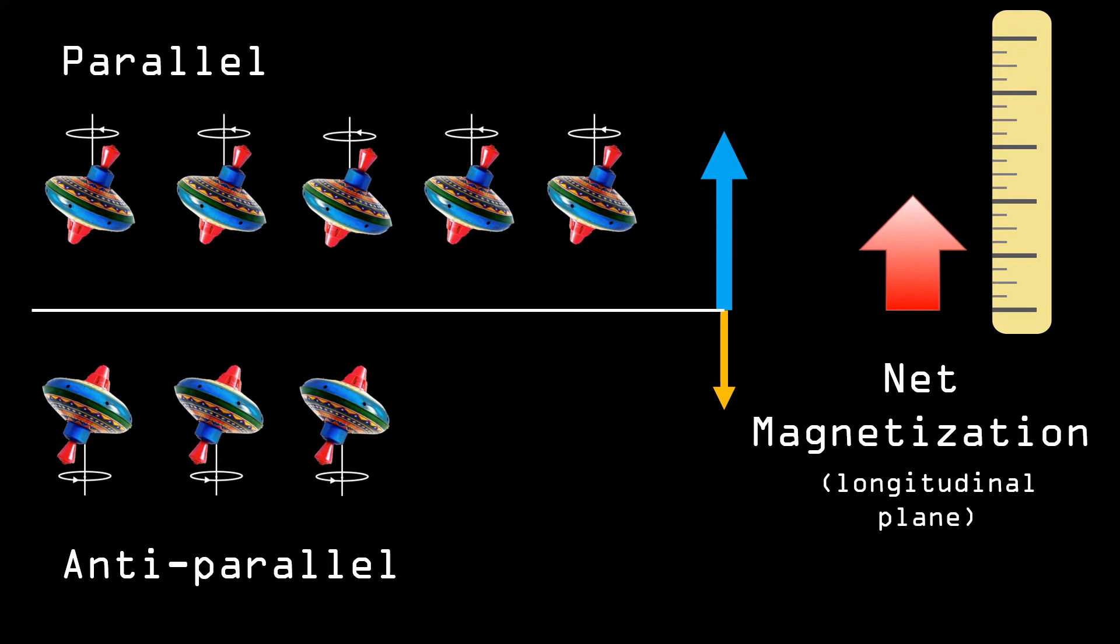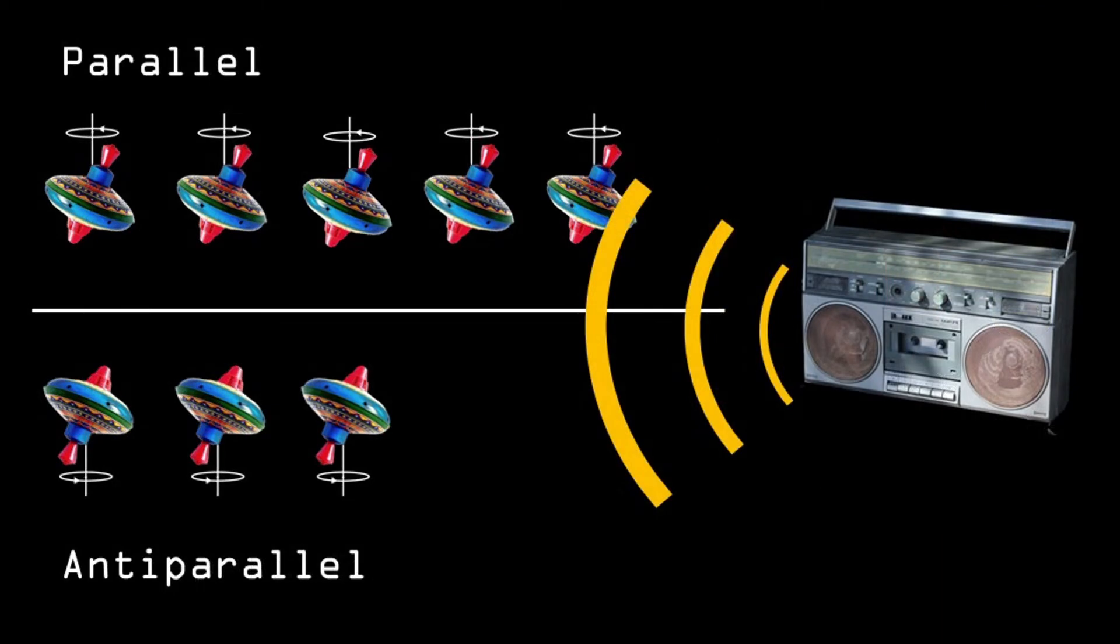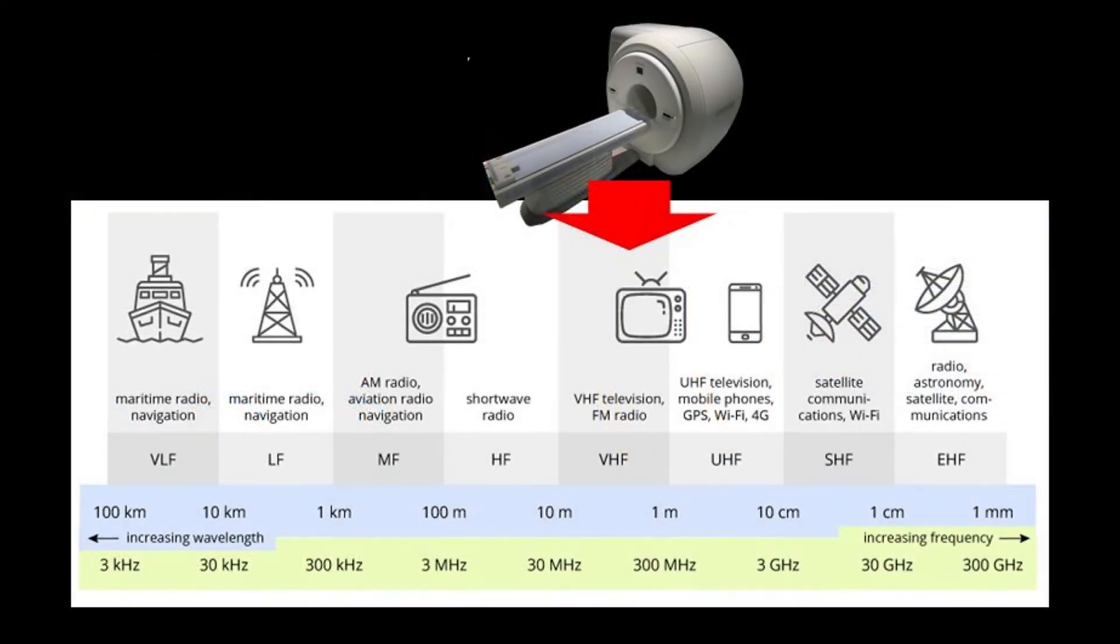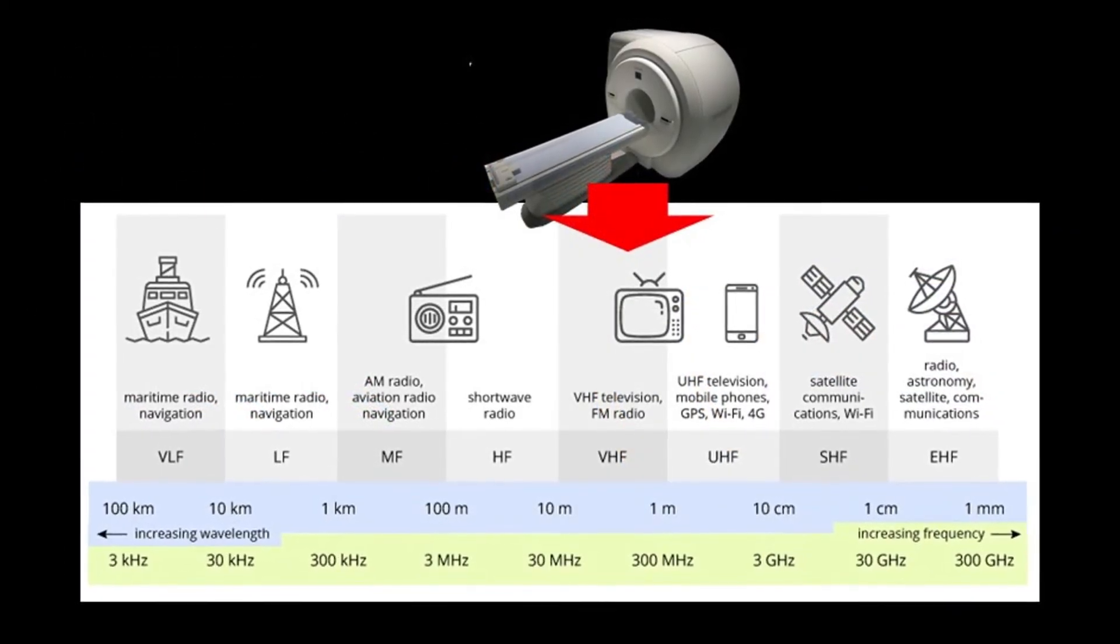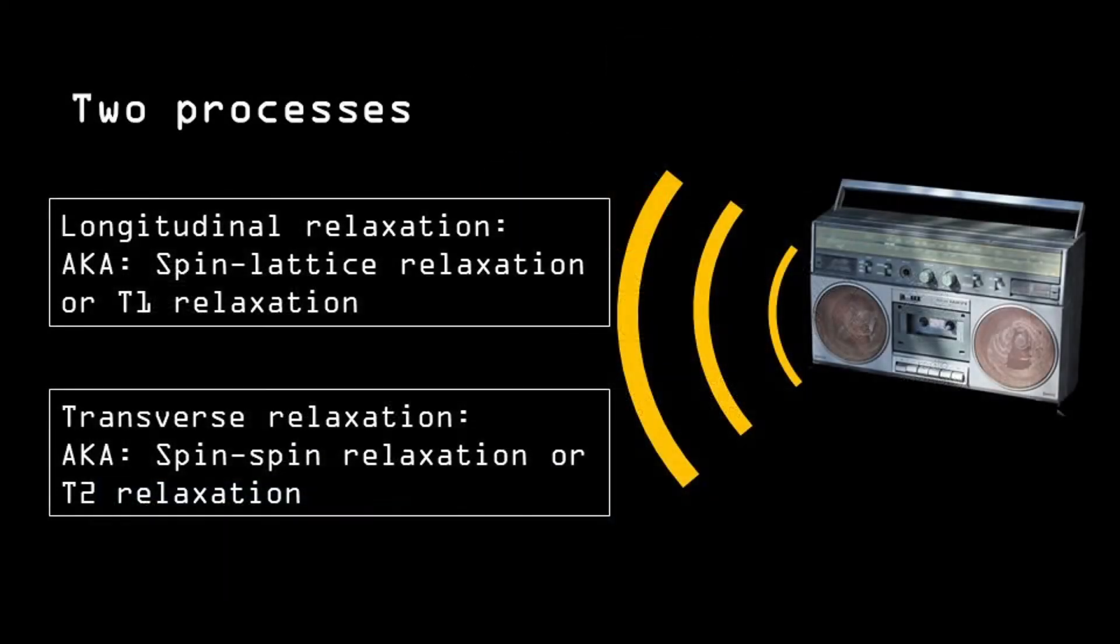That is why, when doing an MRI scan, a radio frequency pulse is applied. Although it's called radio frequency, we're of course not talking about a real radio. The frequencies used by the MRI radio frequency pulse are about 10 to 100 times faster than those in an actual radio.